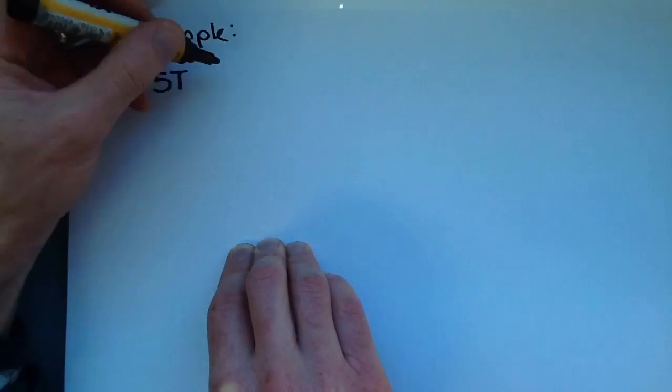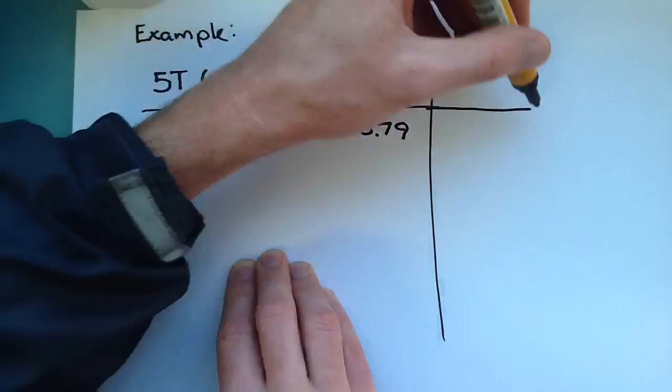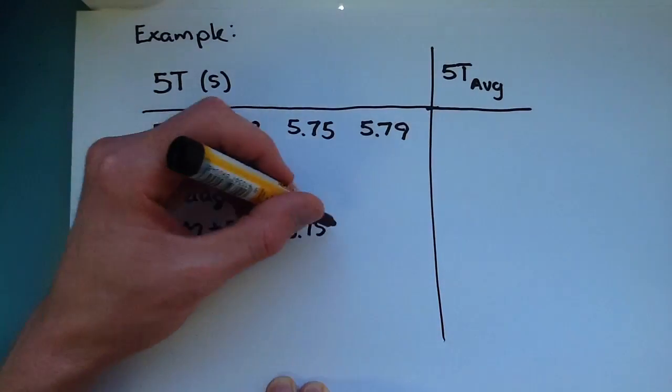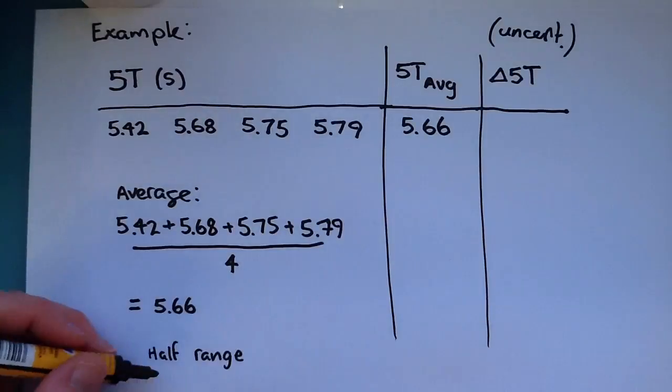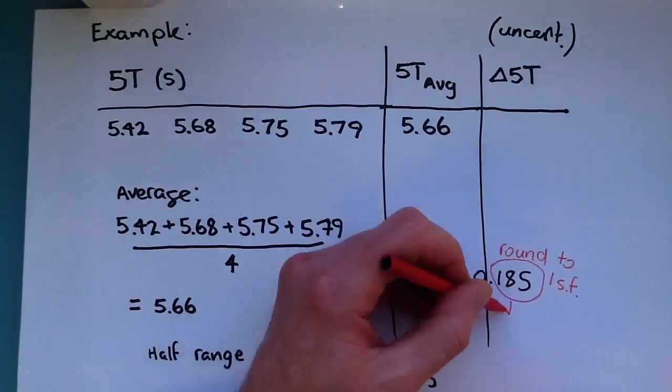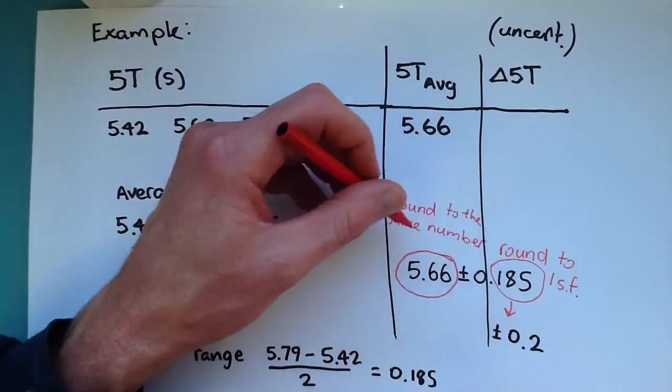We are using repeating and averaging to find the time of 5 oscillations and we are doing 4 repeats in finding the average. We also want to know the uncertainty of this number to know how precise the time measurement is.